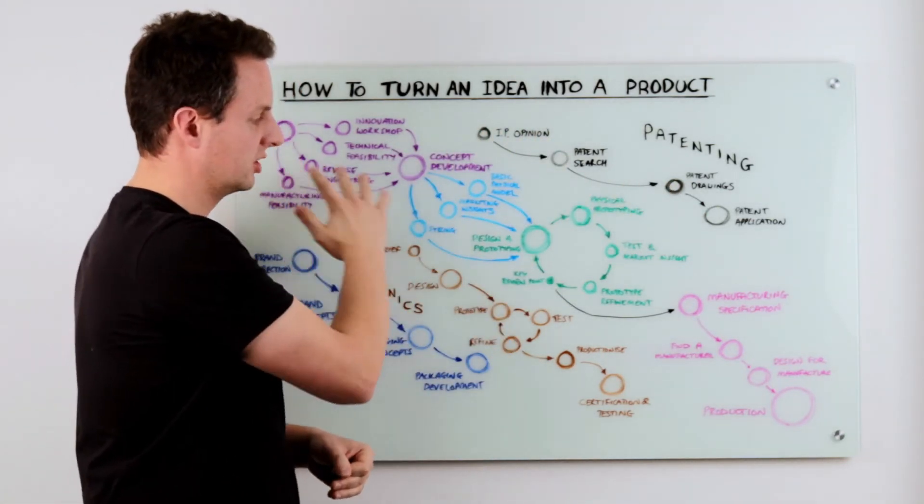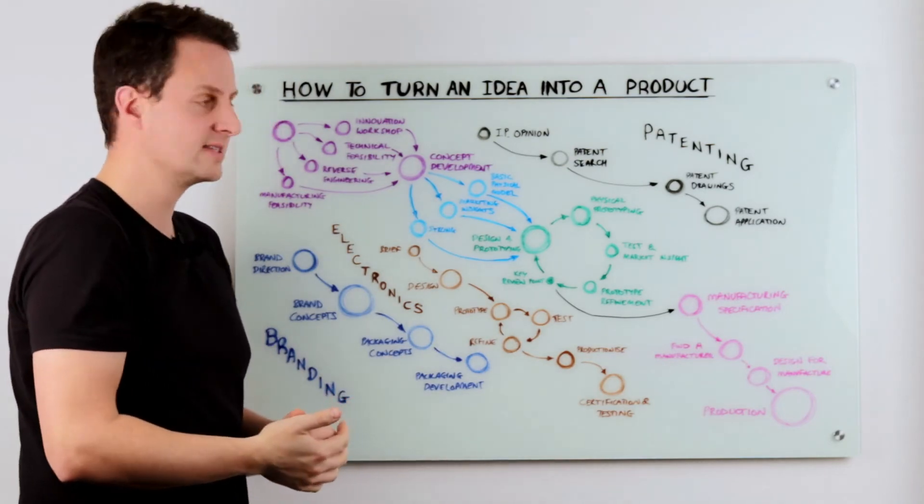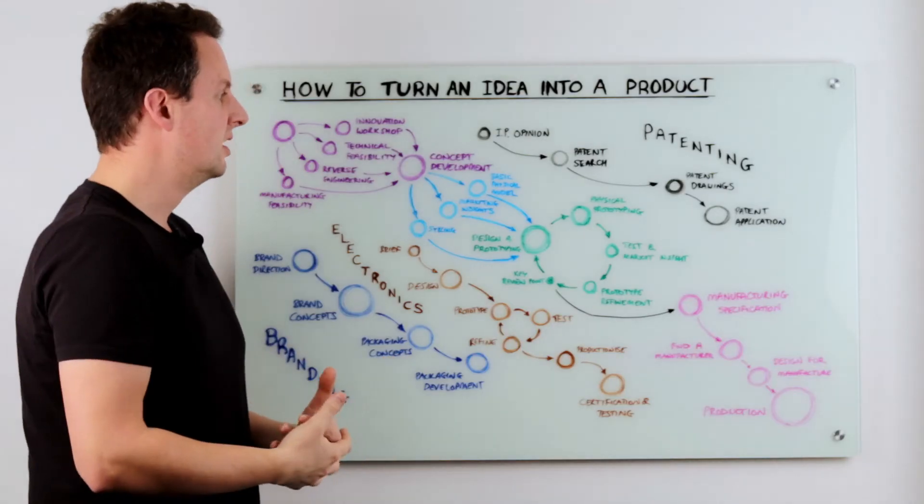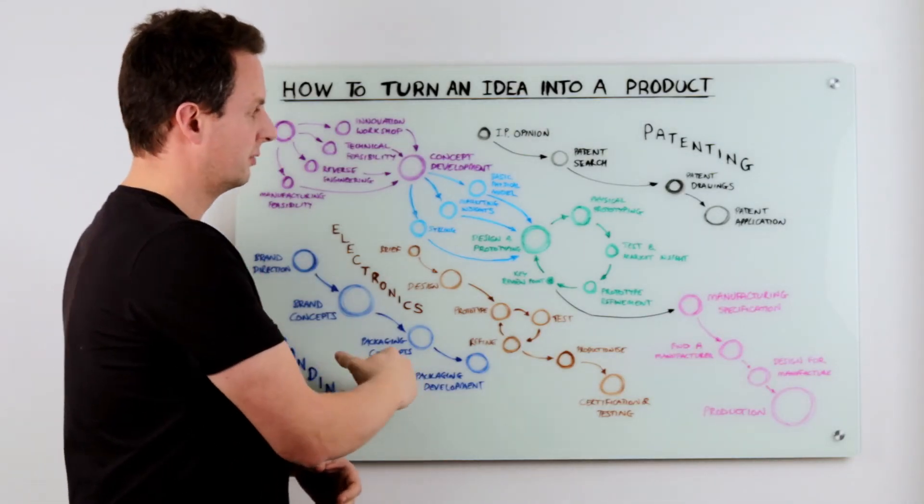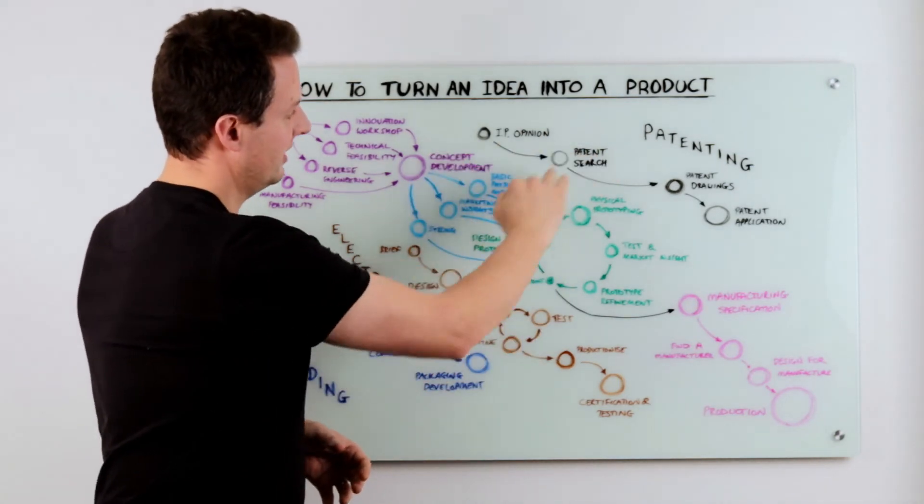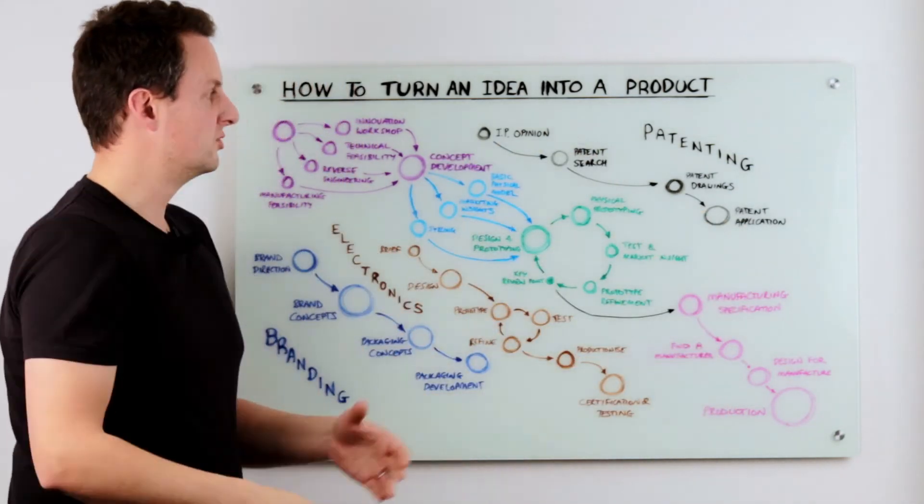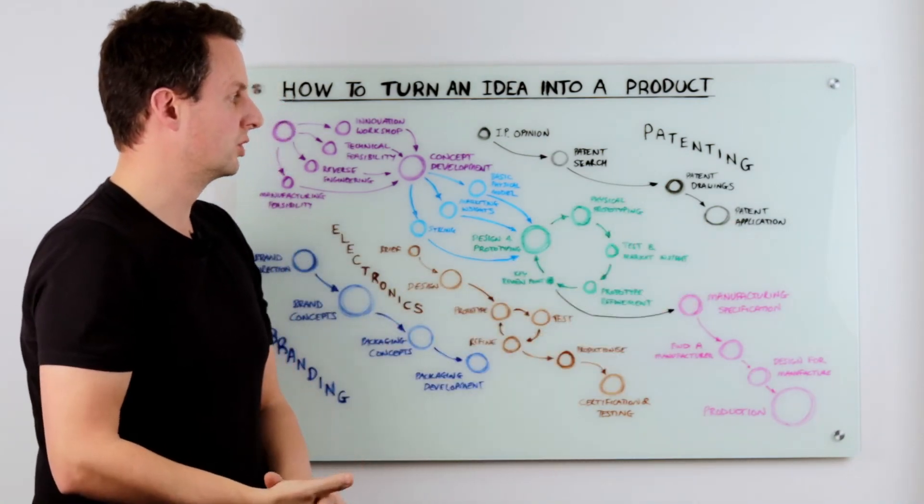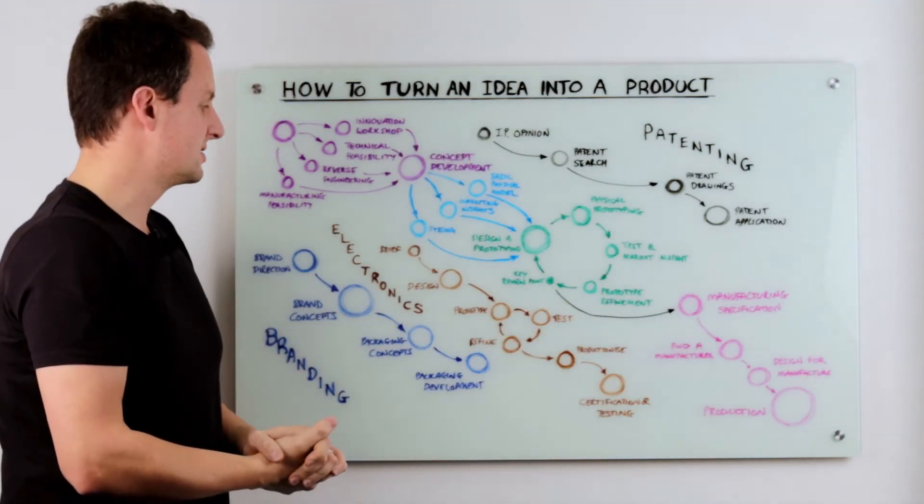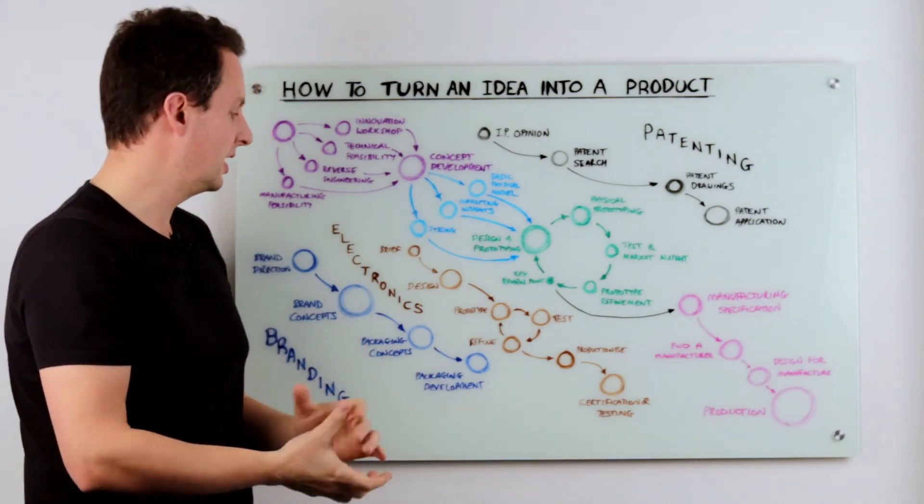Now there are three other streams running alongside the core product development process, and these are IP protection which includes patenting, maybe registered designs, and if you've got a brand you might want to bring in trademarks as well to protect your IP. This is roughly where they fit within the process. Do watch my patenting video which will go through the timings within the product development journey that makes sense for you in terms of your patent applications.